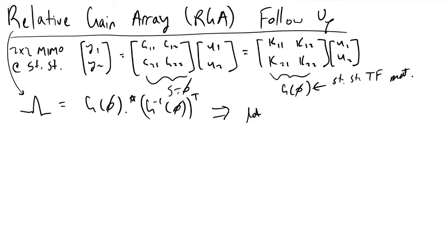we're going to let G inverse 0, so the inverse of your steady state gain matrix, be equivalent to x11, x12, x21, x22, where these are all condensed variable names for what we would find in our matrix.